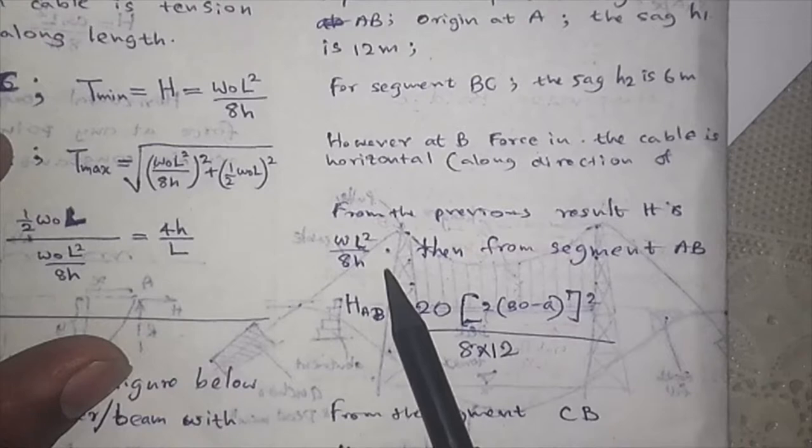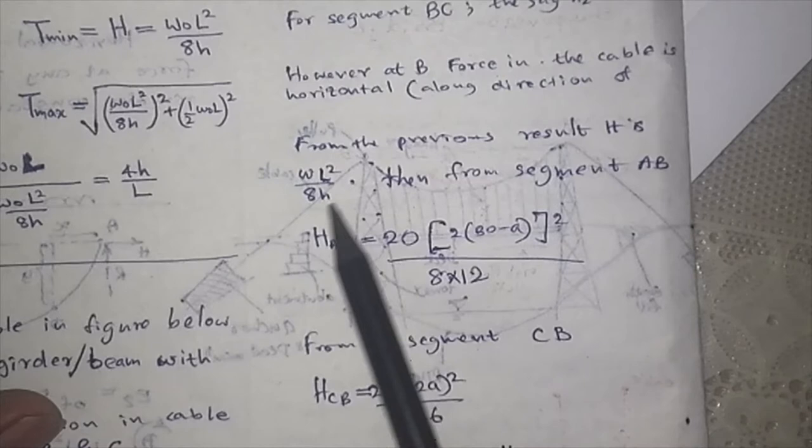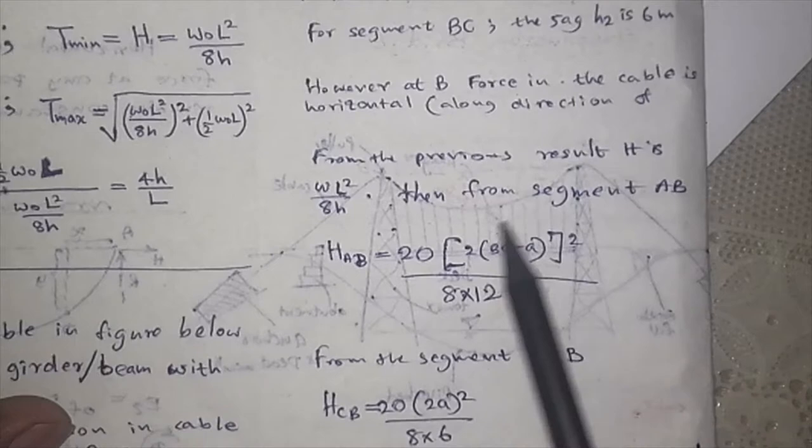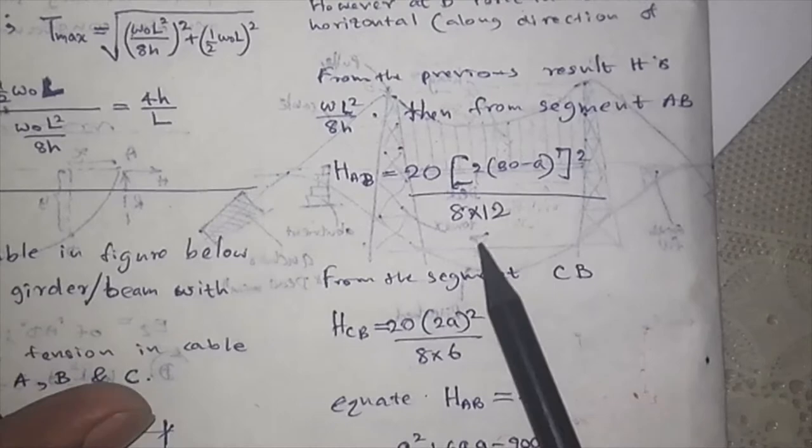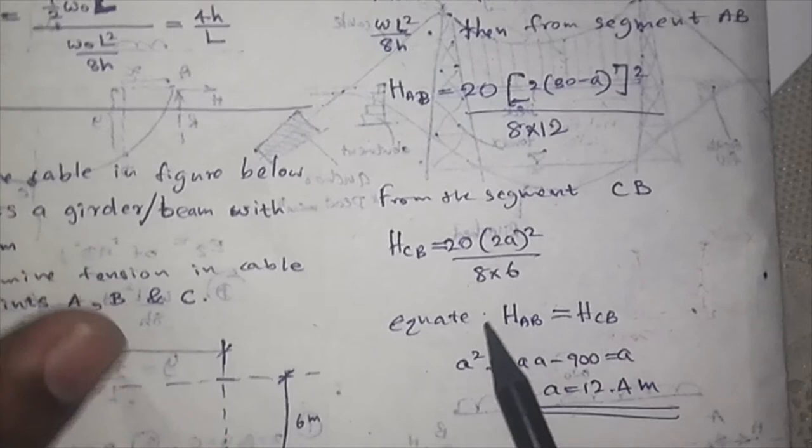From previous results, capital H tension is W L squared over 8H. From segment AB, tension H_AB can be found with the same equation we found previously by substituting the value.